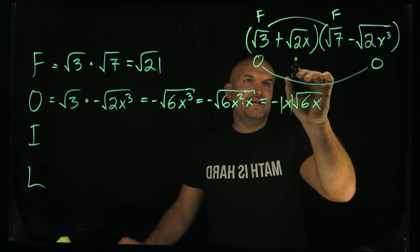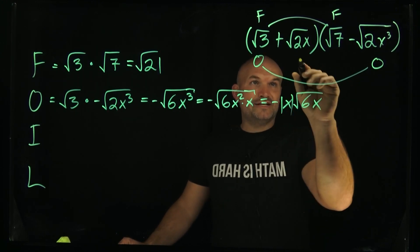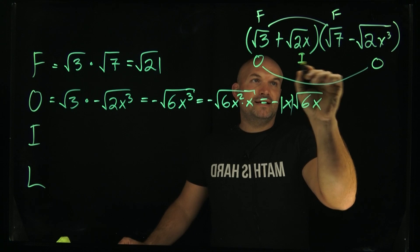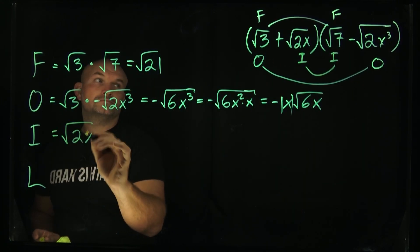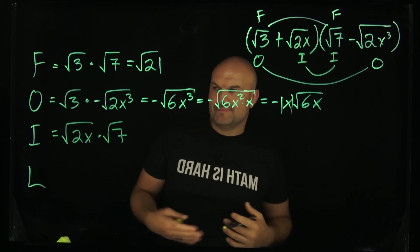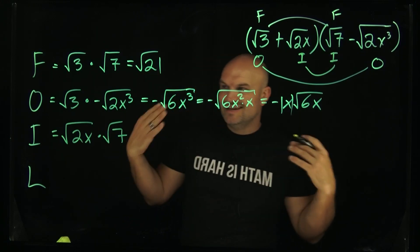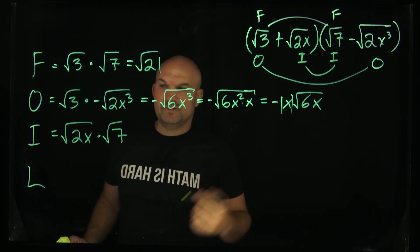Let's take a look at the inner. The inner are going to be the inside two terms. Doing the same thing here, we're multiplying 2x times 7. That's going to remain under the square root, giving us 14x.